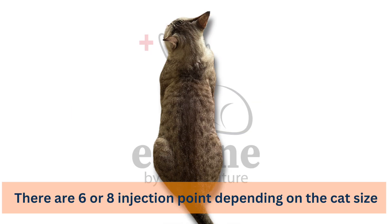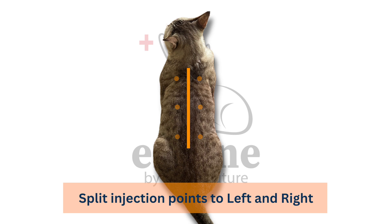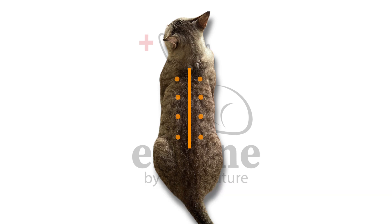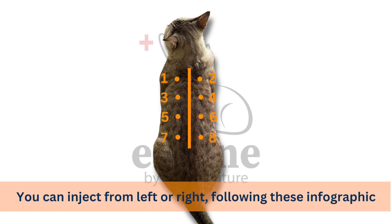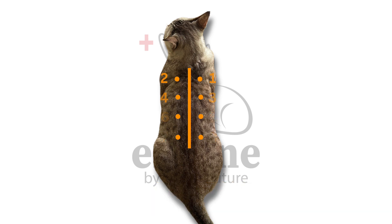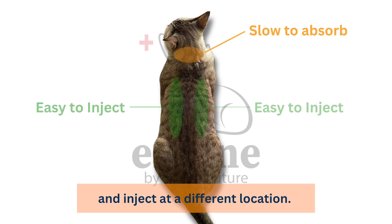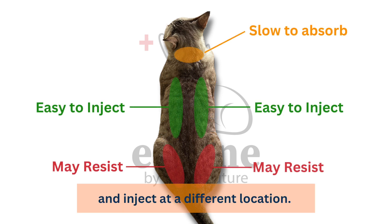How to choose injection points: there are six or eight injection points depending on the cat's size, split into left and right. Each injection point should be one inch away from the spine line. You can inject from left or right following the infographic. You can skip an injection point if it has a wound and inject at a different location.